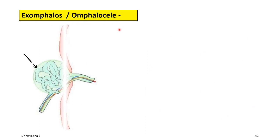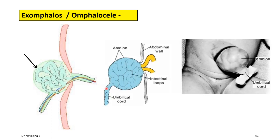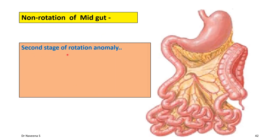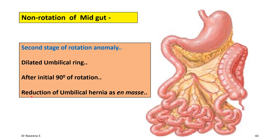Exomphalos or omphalocele: the herniated midgut loop after the first stage of development fails to enter the abdominal cavity and is retained in the fetal end of the umbilical cord, covered by the amniotic layer. This is a defect in the second stage of midgut loop rotation. Non-rotation of the midgut is a second-stage rotation anomaly due to a dilated umbilical ring, because of which the herniated midgut loop reduces into the abdominal cavity en masse after initial 90 degrees of rotation, so that post-arterial segment derivatives occupy the left part and pre-arterial segment derivatives occupy the right part of the abdominal cavity. Such incomplete rotation is known as non-rotation of the midgut.